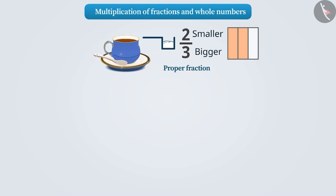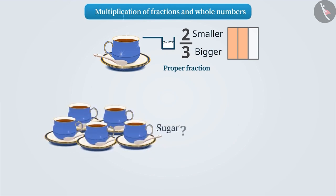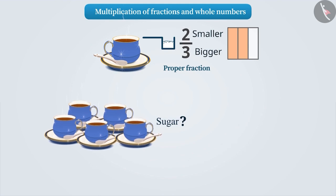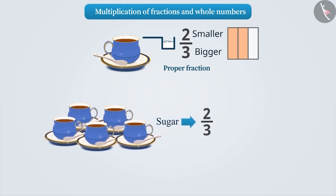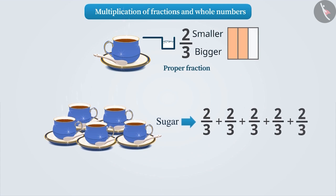We have to find out how much sugar will be required for 5 cups of tea. 2 thirds teaspoon of sugar is required for 1 cup of tea. Then 5 cups of tea will require 2 thirds plus 2 thirds plus 2 thirds plus 2 thirds plus 2 thirds. We can see that 2 thirds has been added 5 times, which can also be expressed in multiplication as 5 multiplied by 2 thirds.